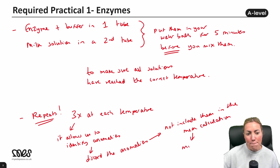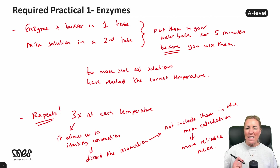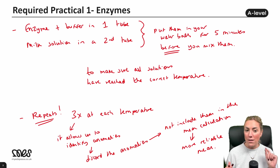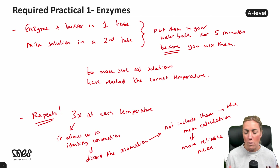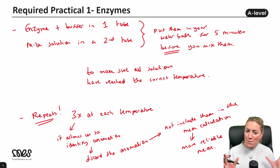Doing three repeats and discarding anomalies gives you a more reliable mean. One issue with this particular practical is that looking for the milk to go clear is a subjective measurement — I might decide it's gone clear and stop the stopwatch, while someone else might think it still looks cloudy. It's based on personal opinion of what 'clear' looks like, which is not ideal, but this is a commonly used required practical that you may have done in school.